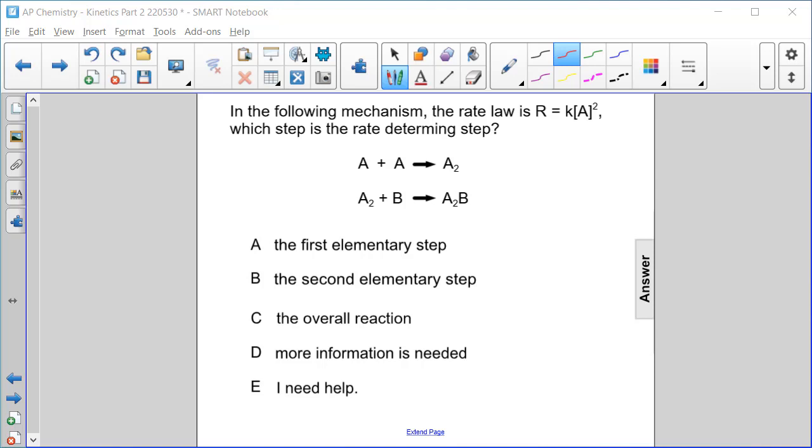In the following mechanism, the rate law is R equals K times A squared. Which step is the rate determining step? Okay, so the rate determining step is the slowest step, and the slowest step determines the rate law.